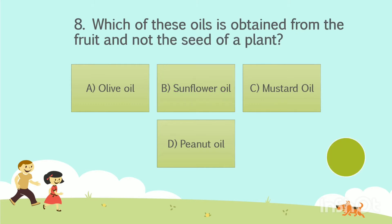Question No. 8. Which of these oils is obtained from the fruit and not the seed of a plant? Option A: Olive oil. Option B: Sunflower oil. Option C: Mustard oil. Option D: Peanut oil. Your time starts now. The answer is Option A: Olive oil.